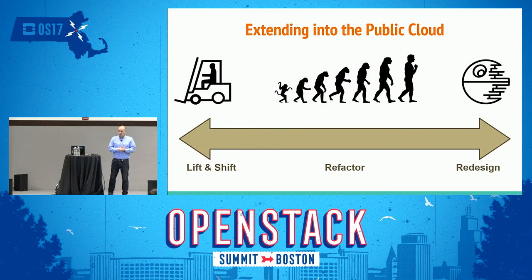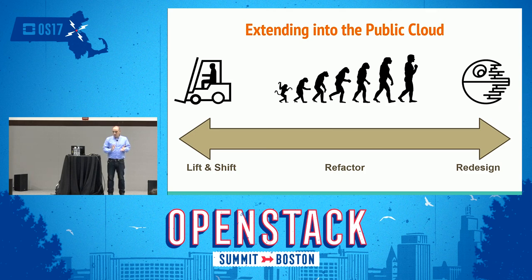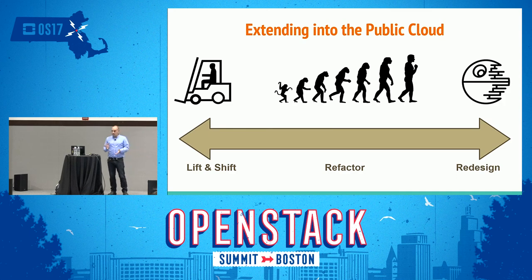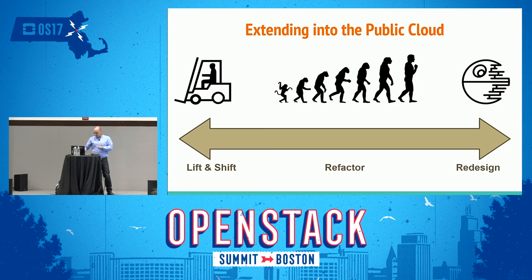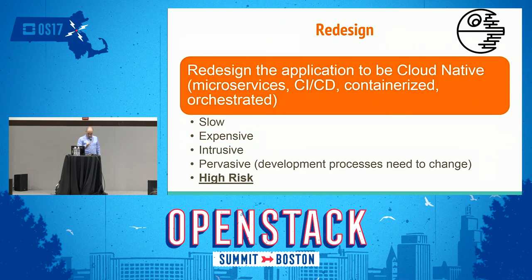Extending to the public cloud — let's say we are an enterprise with some legacy software. We basically have three options to move to a public or hybrid cloud model. On one side, we have lift and shift: take the stuff, move it, run it on the cloud. On the other extremity, we have redesign: completely rewrite everything as cloud-native and go with Kubernetes. And in the middle ground, we have refactoring — the evolutionary approach.